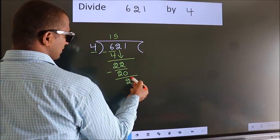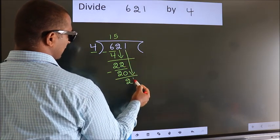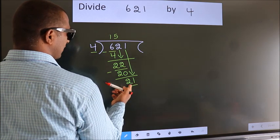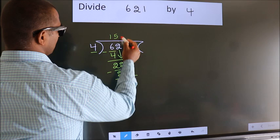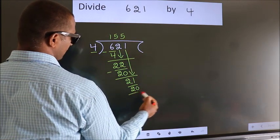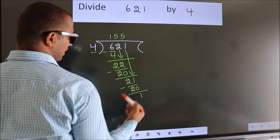After this, bring down the beside number. So 1 down, so 21. A number close to 21 in 4 table is 4 5s 20. Now we subtract. We get 1.